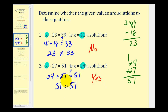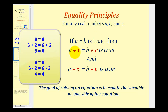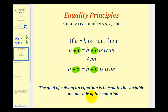Before we take a look at solving our own equations, let's talk about principles of equality. For any real number, if a equals b, then a plus c must equal b plus c — meaning if we add the same number to both sides of the equation, the resulting equation will still be true. We could also subtract c on both sides and the result would also be true. We're going to use this principle to isolate the variable on one side of the equation by adding or subtracting numbers on both sides.